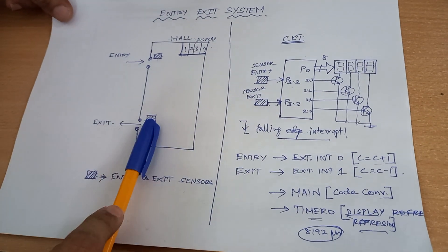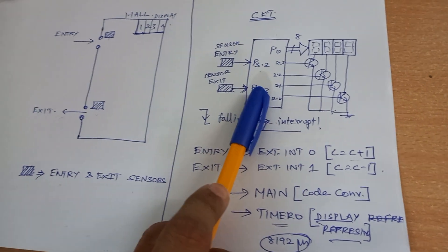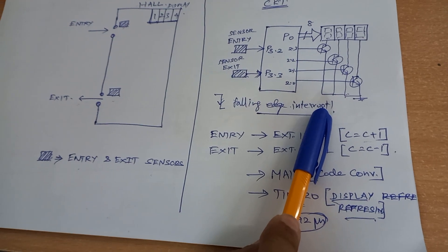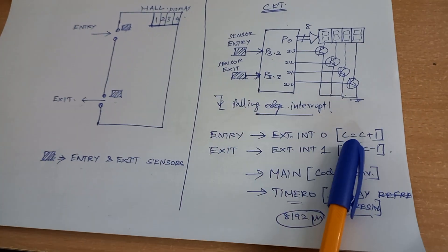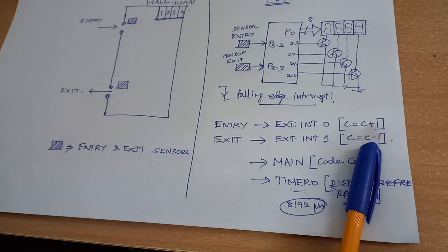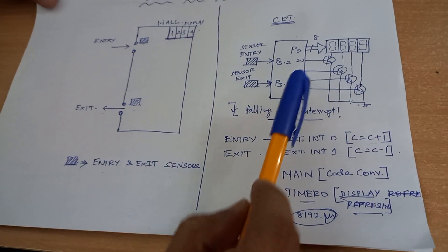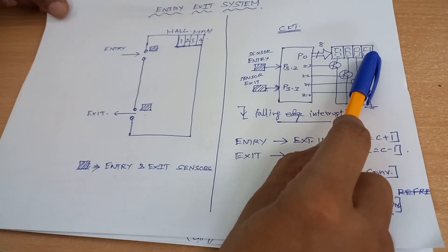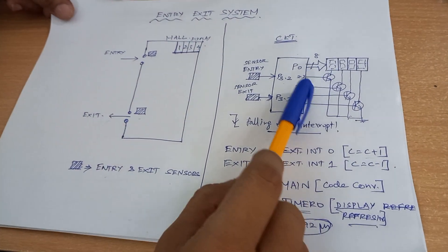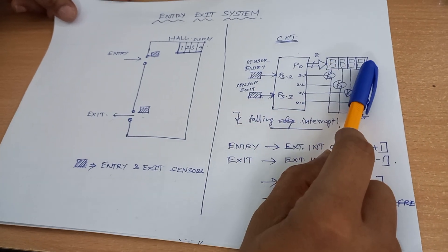These entry and exit sensors are connected to the interrupts of the AT51 — external interrupt 0 and external interrupt 1 — configured in falling edge trigger mode. Every entry increments a variable c, every exit decrements variable c, and the main routine does the necessary code conversion for displaying it on a multiplexed 7-segment display. A timer 0 interrupt service routine refreshes the multiplexed 7-segment display.